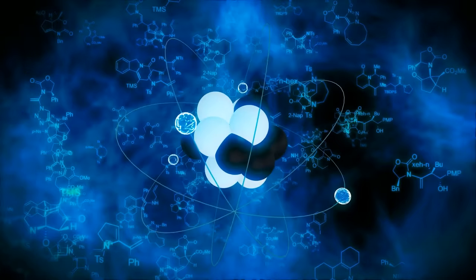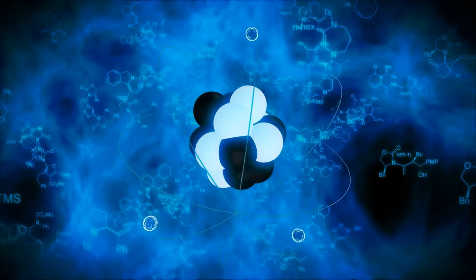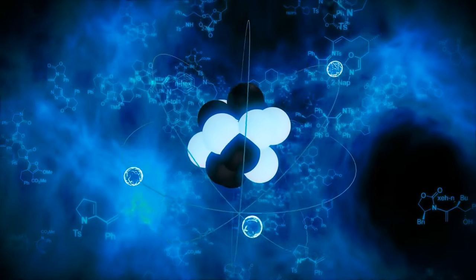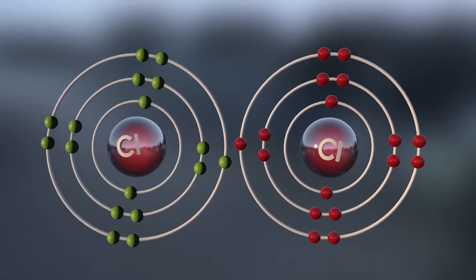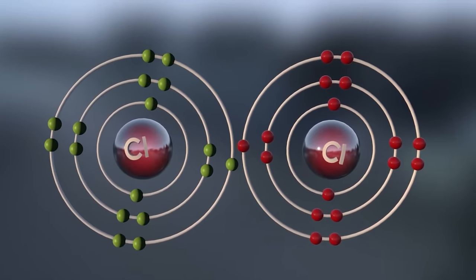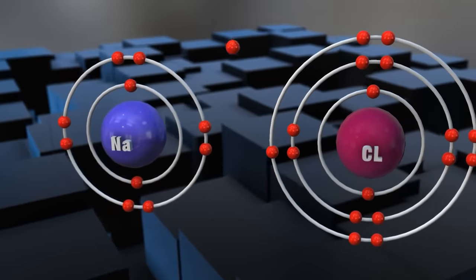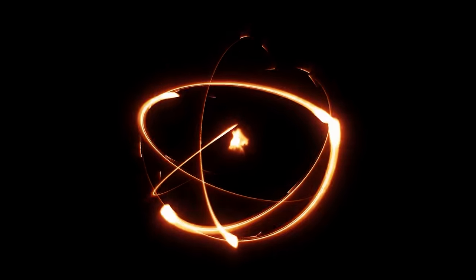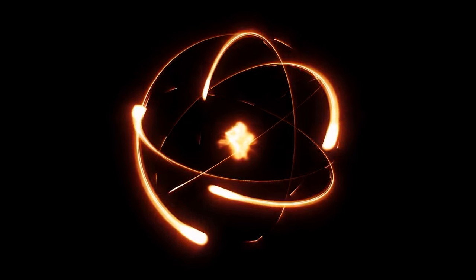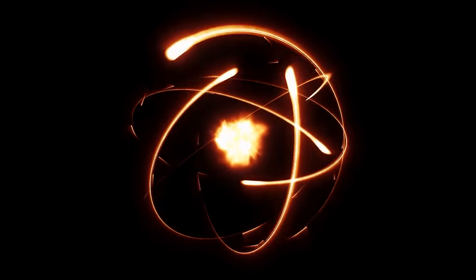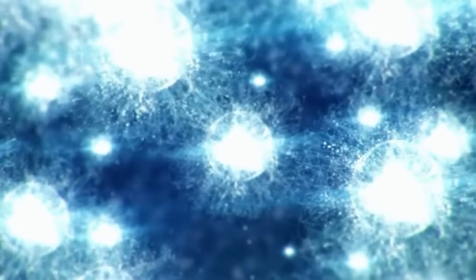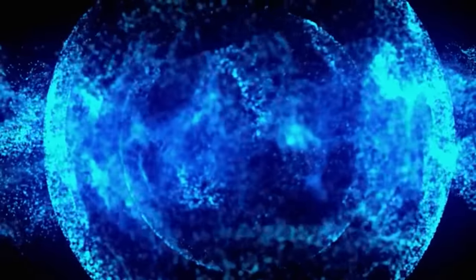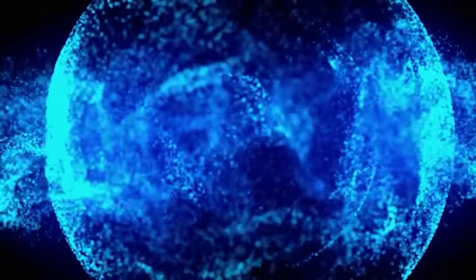Atoms embark on a quest for stability, aspiring to achieve a complete valence shell of electrons. This pursuit manifests through either the collaborative endeavor of sharing electrons in covalent bonds, or the transformative act of transferring electrons in ionic bonds. The magnetic interplay between the attractive force propelling electrons sharing for the attainment of a full valence shell encounters a delicate equilibrium with the repulsive forces emanating from electron clouds and protons within the atomic nucleus.